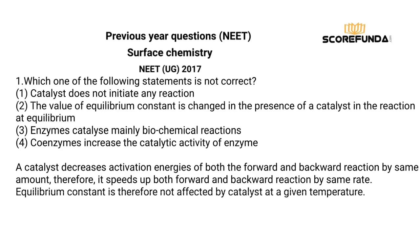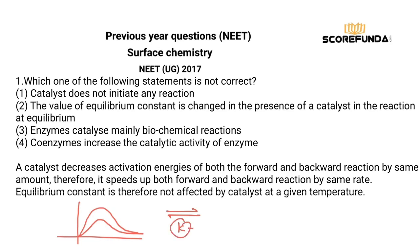A catalyst decreases the activation energy of both forward and backward reactions, which means it helps bring the system to equilibrium more rapidly. However, the equilibrium constant K does not change — the equilibrium constant never changes in the presence of a catalyst.